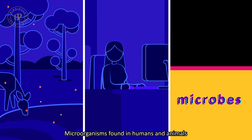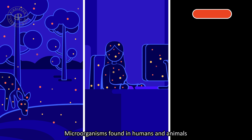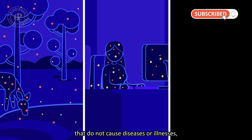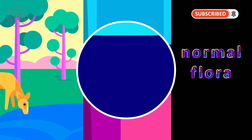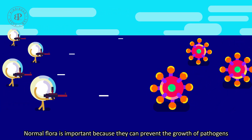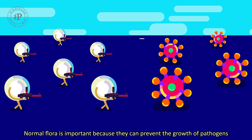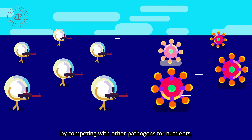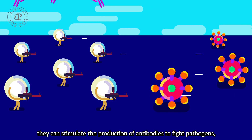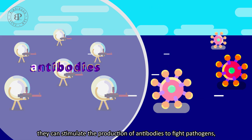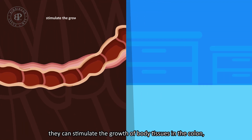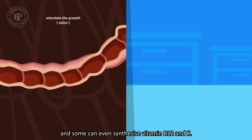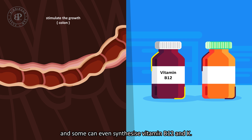Micro-organisms found in humans and animals that do not cause diseases or illnesses are known as normal flora. Normal flora is important because they can prevent the growth of pathogens by competing with other pathogens for nutrients. They can stimulate the production of antibodies to fight pathogens, stimulate the growth of body tissues in the colon, and some can even synthesize vitamin B12 and K.